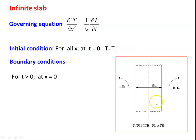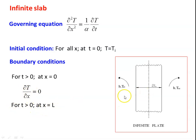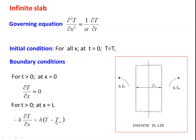The boundary condition at x equal to 0 for time t greater than 0 — at the center — the temperature gradient is zero: ∂T/∂x = 0. At x equal to L on the surface, on both sides, there is convection: −k(∂T/∂x) = h(T − T∞), where T is the temperature at the surface. These are the governing equation, the initial condition, and the boundary conditions. With these conditions, you solve the differential equation to get the solution.